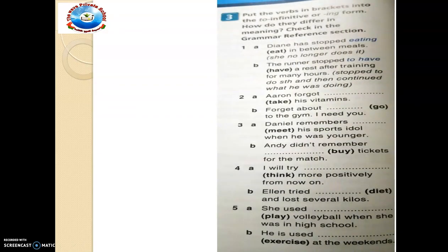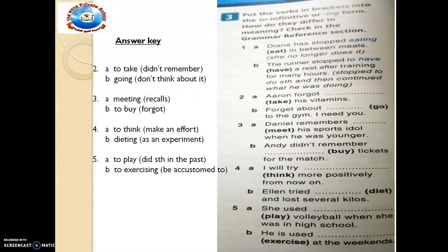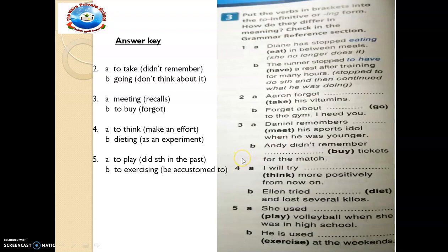Exercise three also practices infinitive and ING forms. The question says: put the verbs in brackets into the infinitive or ING form — how do they differ in meaning? Check the grammar reference section. For example, Danny has stopped eating between meals. 'Stop' was given, 'eating' is the ING form. Copy the answers into your notebooks.